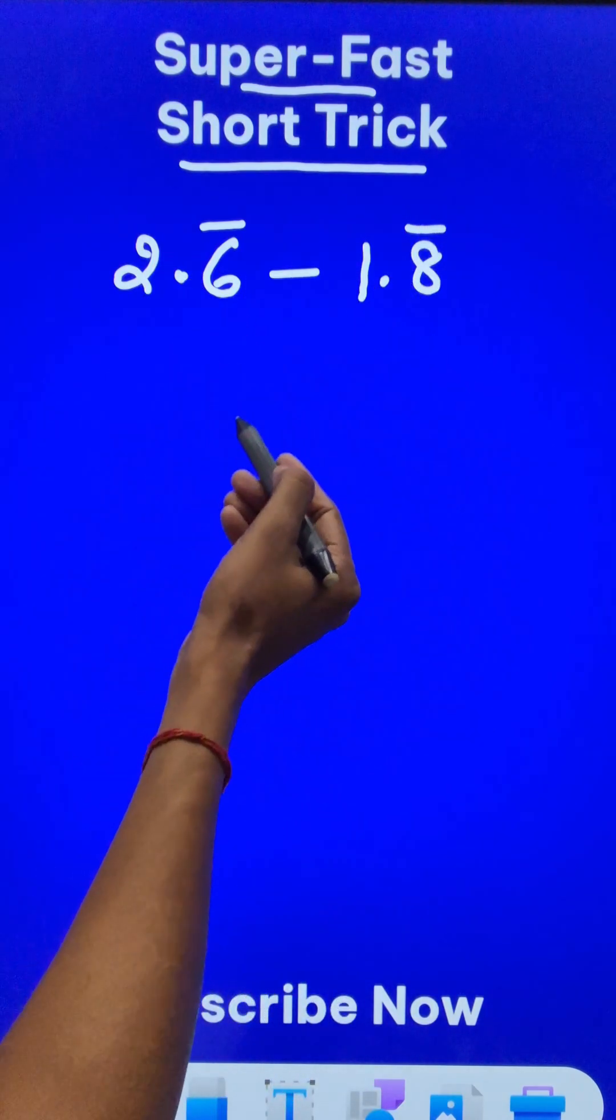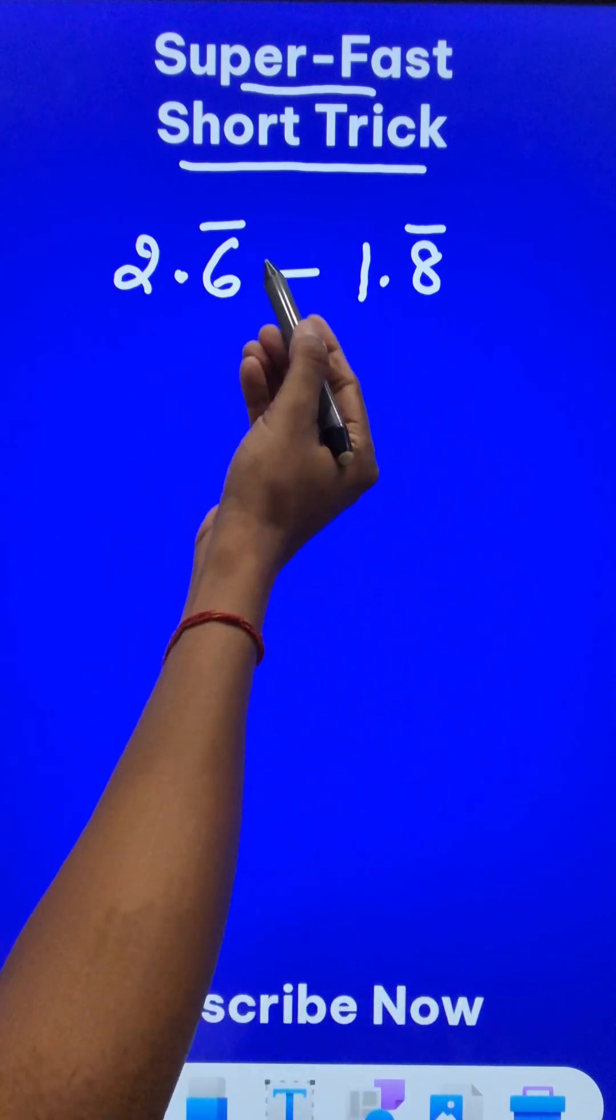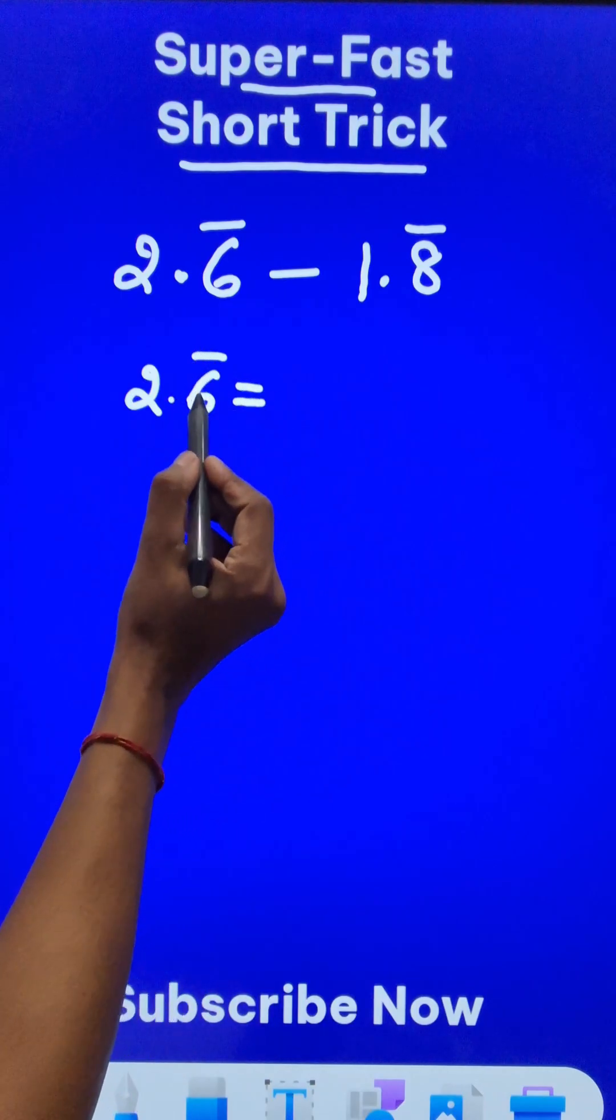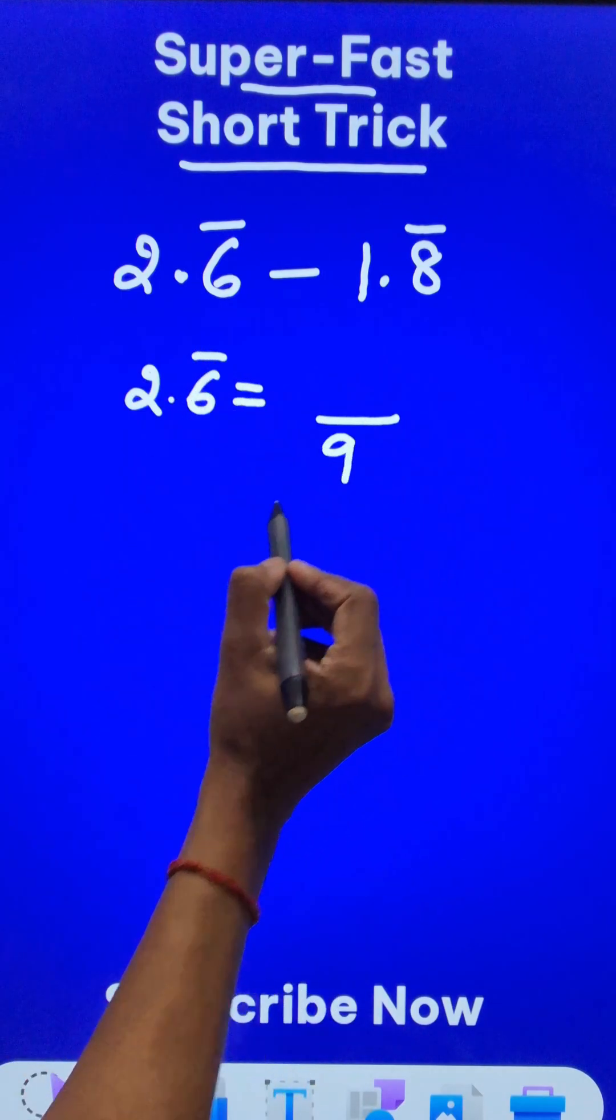The non-terminating decimals first have to be converted into rational form. And that's what the short trick here is. Now if you see 2.6 bar, the bar is over only one digit. So we will write a 9 in the denominator.